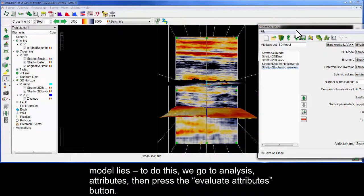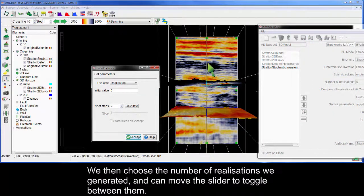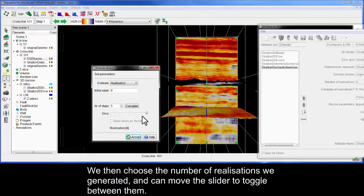To do this, we go to Analysis, Attributes, then press the Evaluate Attributes button. We then choose the number of realizations we generated and can move the slider to toggle between them.